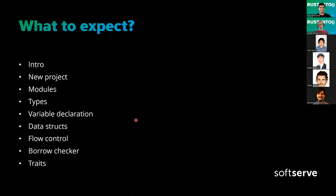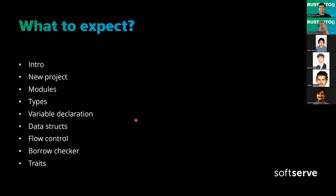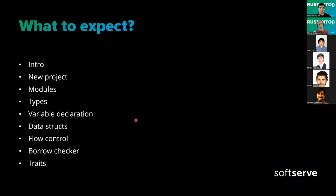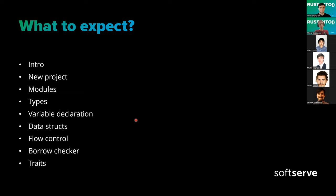So what can you expect from this talk? We'll start with some introduction, then I'll show you how easy it is to create a new project and start doing Rust things, and I'll talk briefly about modules. Then we'll go over code-related stuff like types, variable declaration, data structures, and different kinds of flow control. After this, we'll have a big topic: the borrow checker and some traits introduction at the end. This talk is rather a quick walkthrough of Rust so you know what tools it offers to programmers — kind of knowing what you can prepare yourself for.